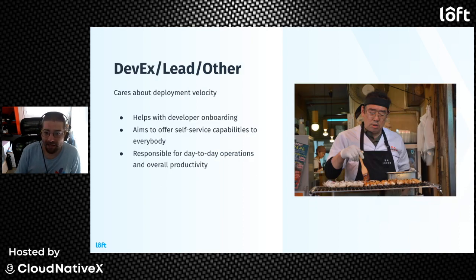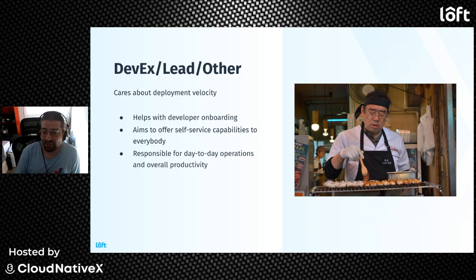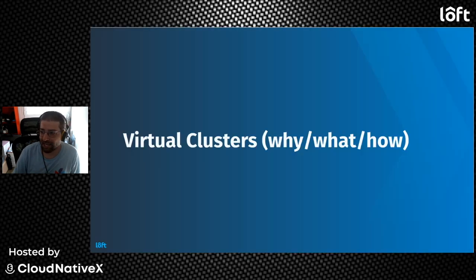Last, we have the other people in the company dealing with the software delivery process — for example, a DevEx person, team lead, or CTO. They care about velocity — not only sending features to production, but also failures in production, how much time it takes to onboard a new developer, form a new team, or spin up a new service. They're not involved with writing code directly, but they are interested in the overall processes. The main takeaway is that vClusters offers something for everybody.